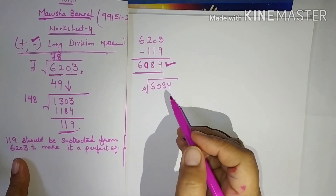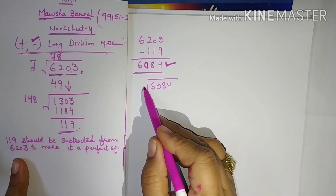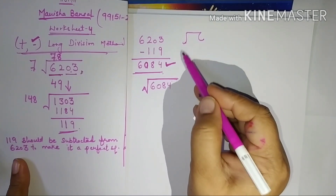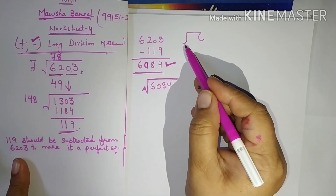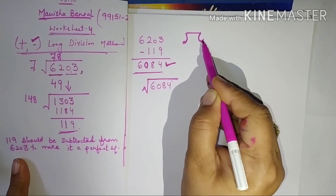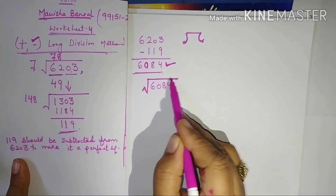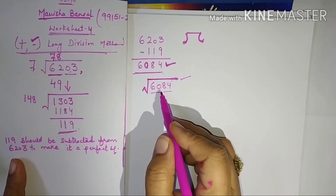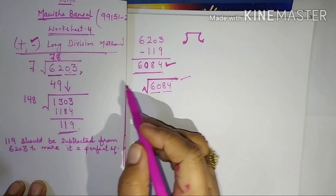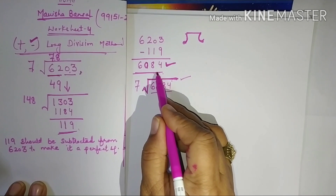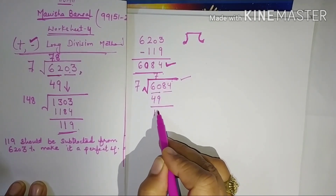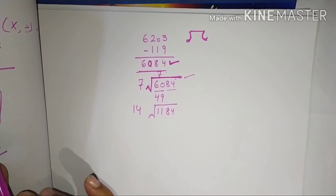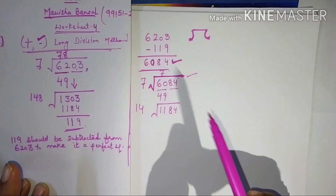Children, when calculating the square root, pay attention to the symbol. The square root symbol and the division symbol look similar — students sometimes mix them up. The square root symbol is different from the division sign. Now applying long division to 6084: pair as 60 and 84. Perfect square less than 60 is 49, so 7 × 7 = 49. Remainder 11, bring down 84 giving 1184. With 148 × 8 = 1184, remainder is 0.